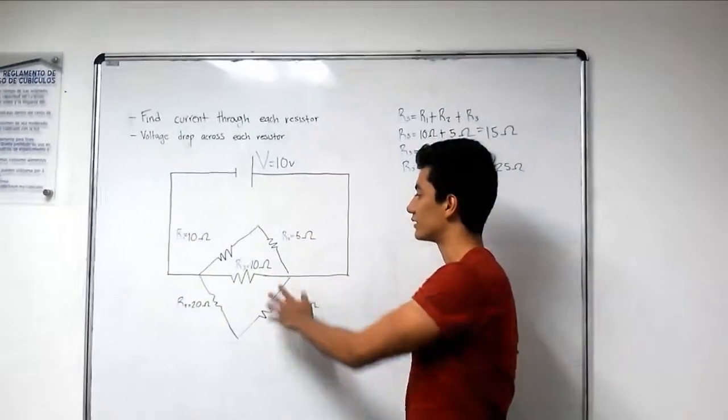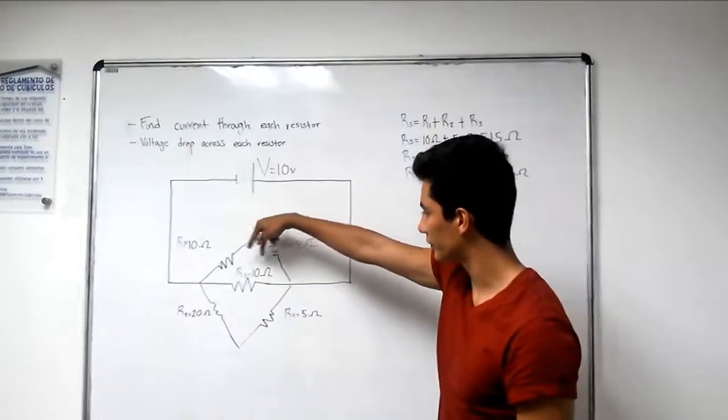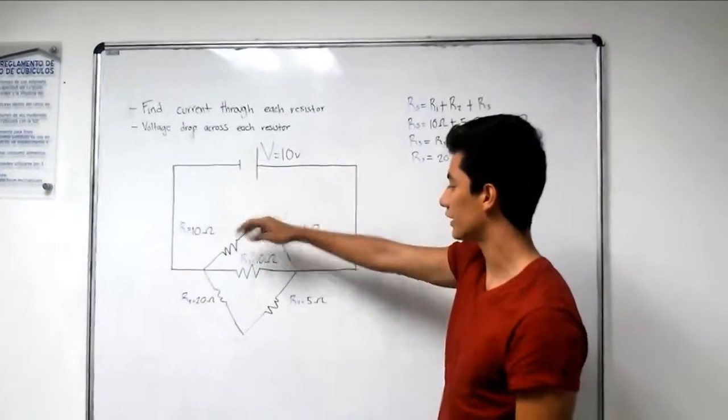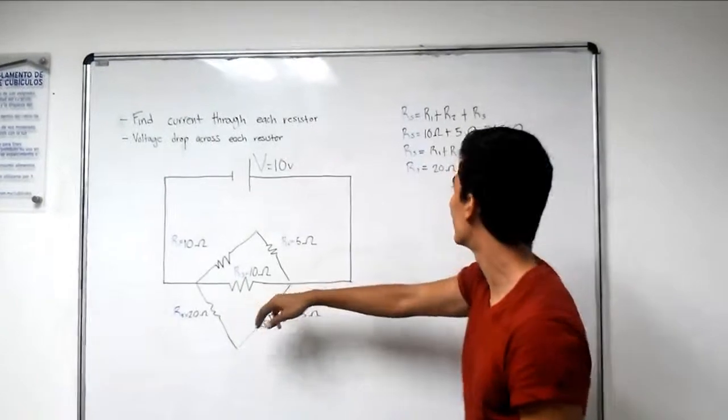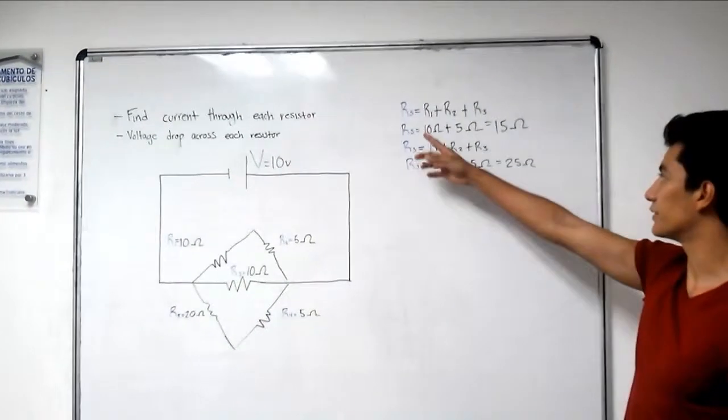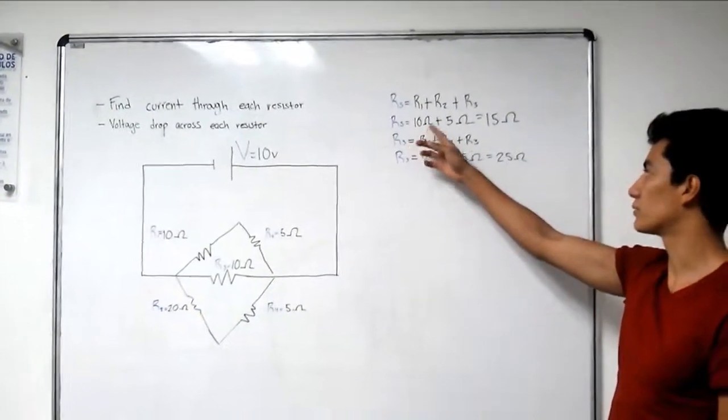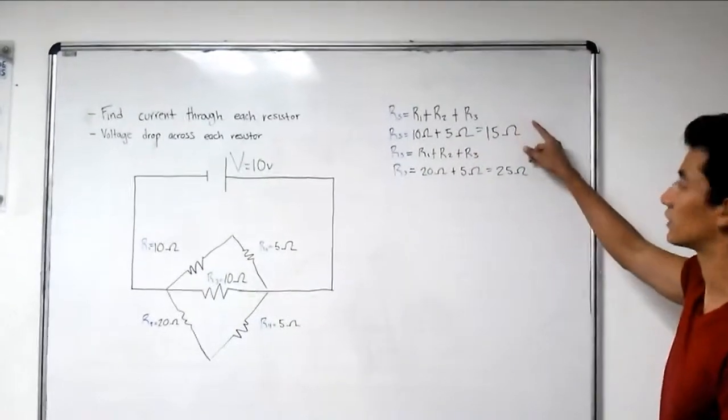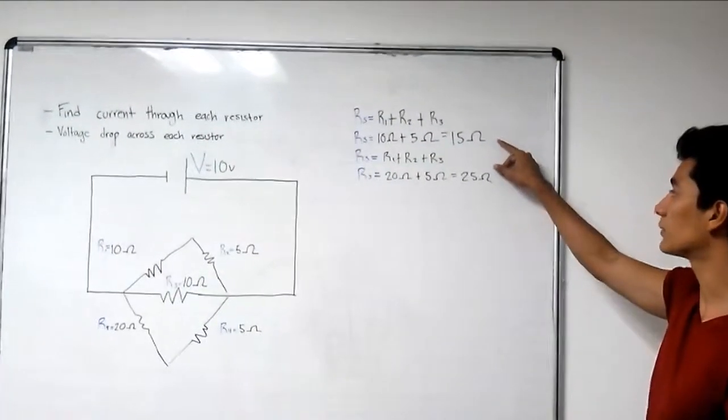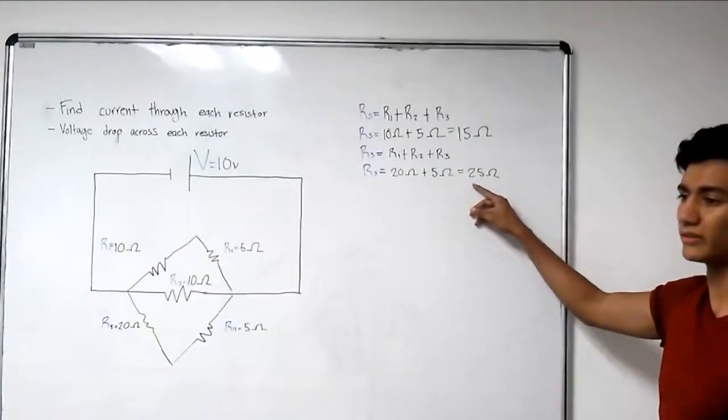We have five resistors. So we take these two resistors as one series and these two as another series. And to get the final resistance we just sum each one of the resistors. First one is 15 ohms, second one is 25 ohms.